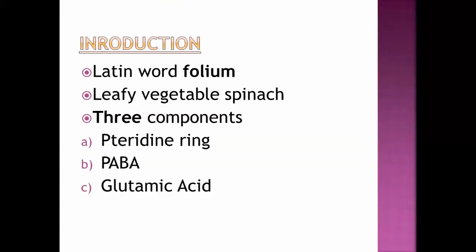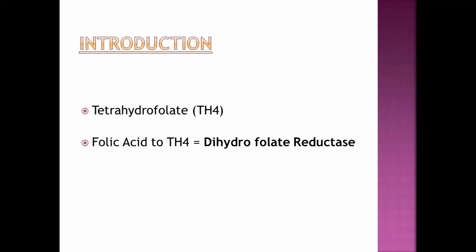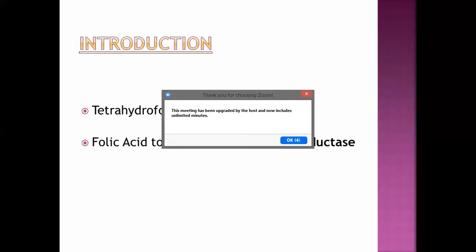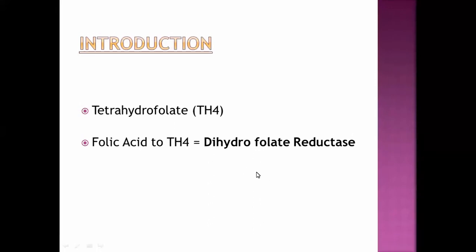The biochemical structures of folic acid include the pteridine ring, para-aminobutyric acid, and glutamic acid. Tetrahydrofolate (THF) is the active or functional form of folic acid. Folic acid is converted into tetrahydrofolate by the action of the enzyme known as dihydrofolate reductase — an important point for exam purposes. Dihydrofolate reductase catalyzes the conversion of folic acid to tetrahydrofolic acid.